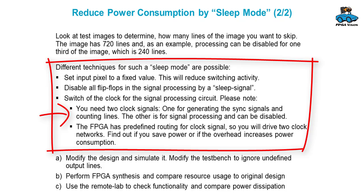There is something you should note here. If you do this you will need two clock signals. One is the clock signal still needed for generating sync signals and counting lines to wake up the other clock. The second clock will be disabled and is used for signal processing. The FPGA has predefined routing for the clock signals, and this routing is rather large — it covers the whole FPGA. So if you drive two clock networks you might even get more power consumption.